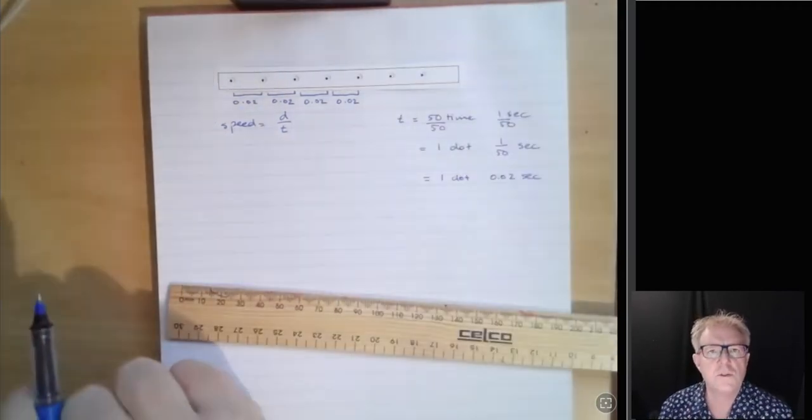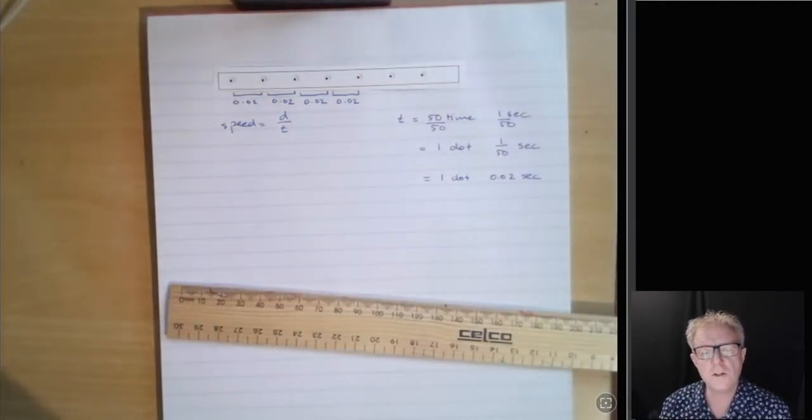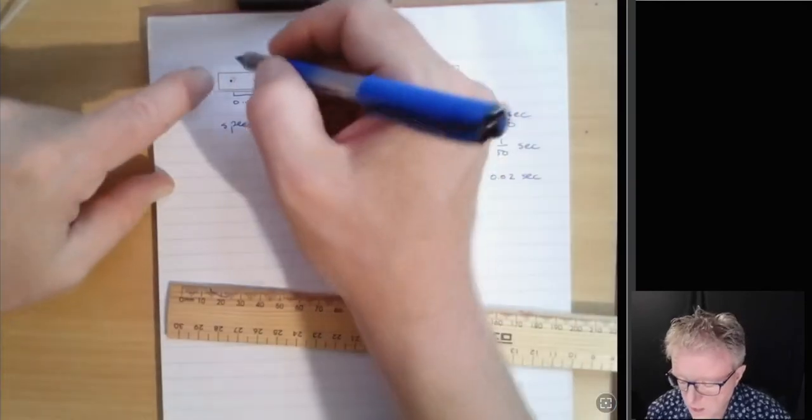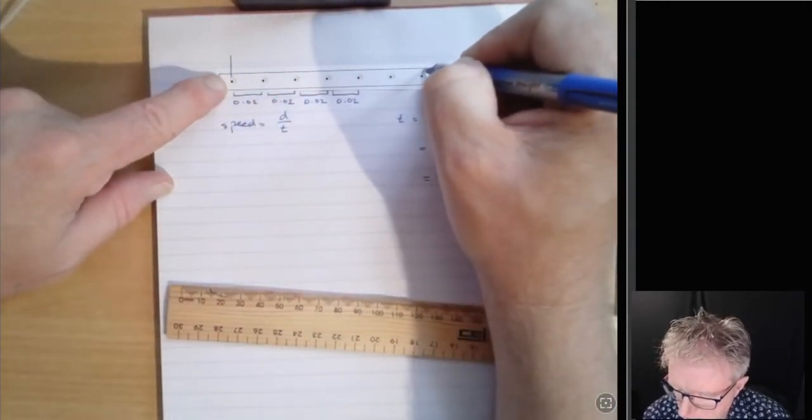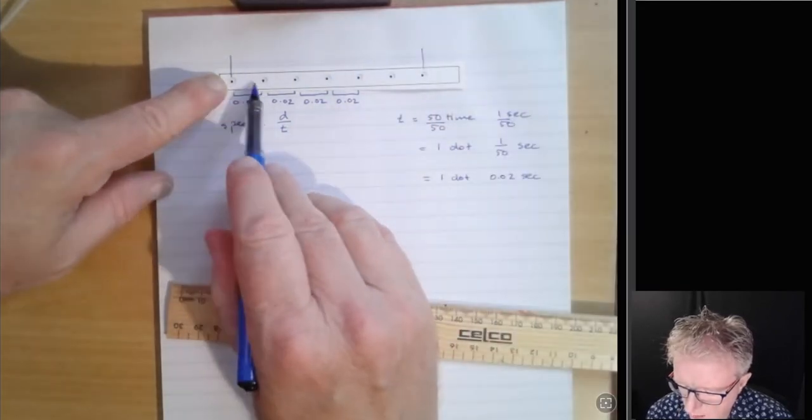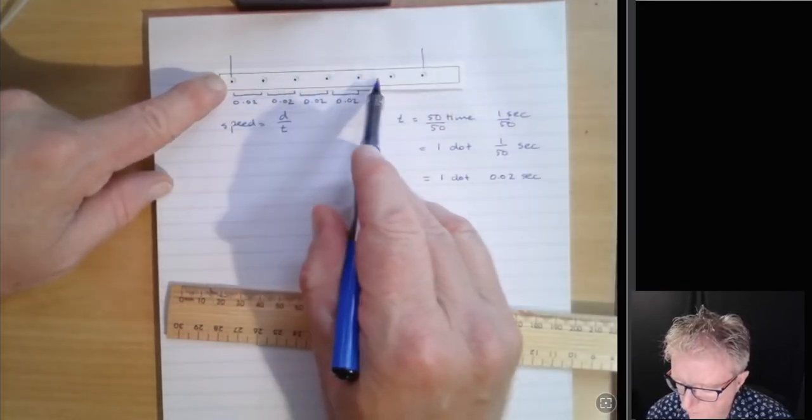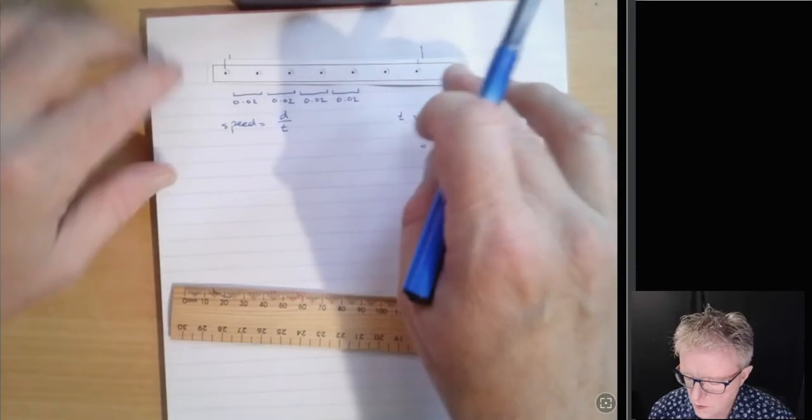So what you need to do with your ticker tape strip, of course, is count up how many dots you're going to do. So with this particular one here, I'm starting there, and I'm going to finish counting just there. So I've got 1, 2, 3, 4, 5, 6.